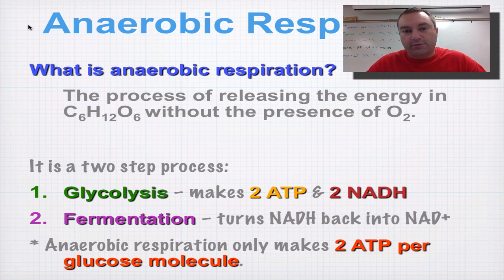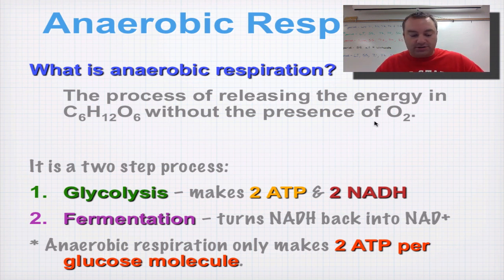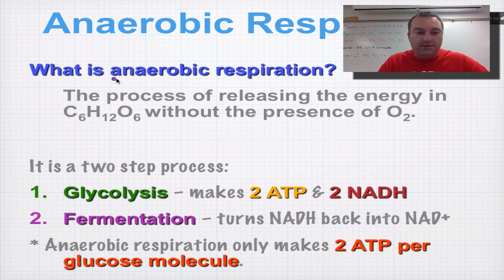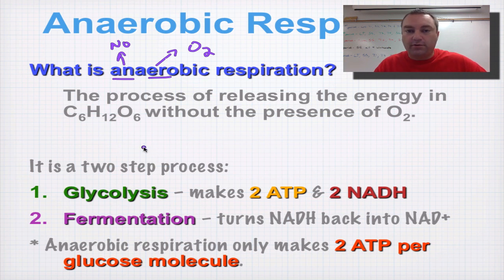Without oxygen you're still going to get enough ATP to potentially keep you alive, but by no means are you going to get anywhere near the same amount as you did in aerobic respiration. Anaerobic respiration means without the presence of oxygen. The 'an' part means no and the 'aero' part means oxygen — so no oxygen, and not as efficient. There are two steps: number one is glycolysis, no different than what we learned before.